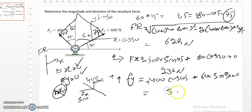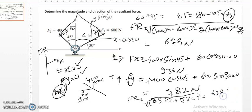So you can find here the FR. How to find that? 236 squared plus 582 squared, and the root. So the same value will be here, 629. So this means these questions you can solve by two methods, also by equilibrium and also by cosine formula.